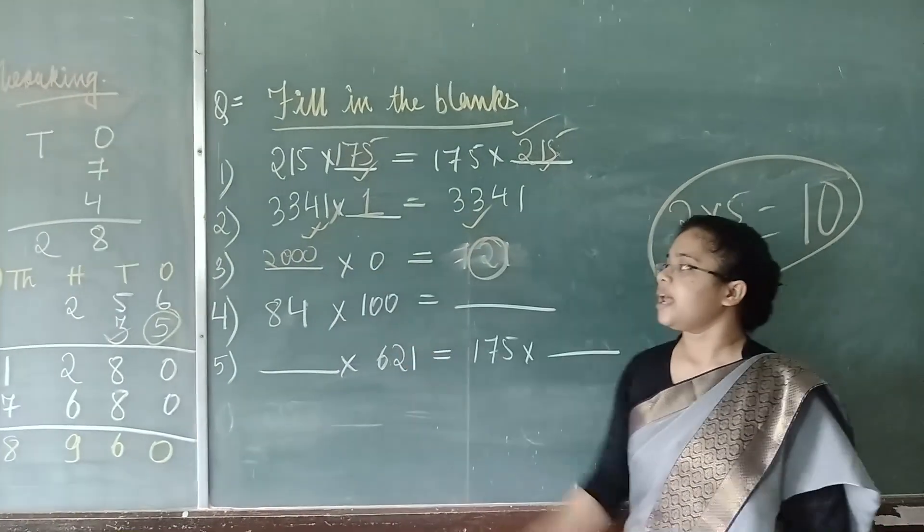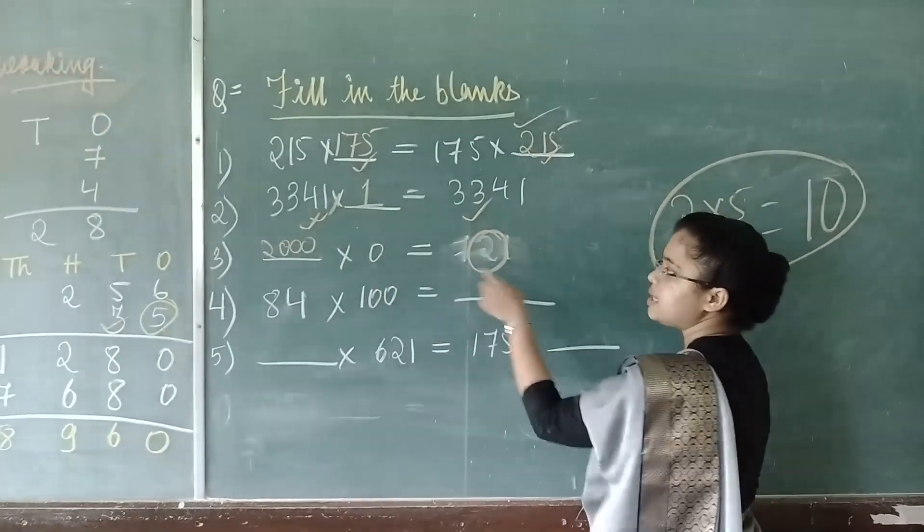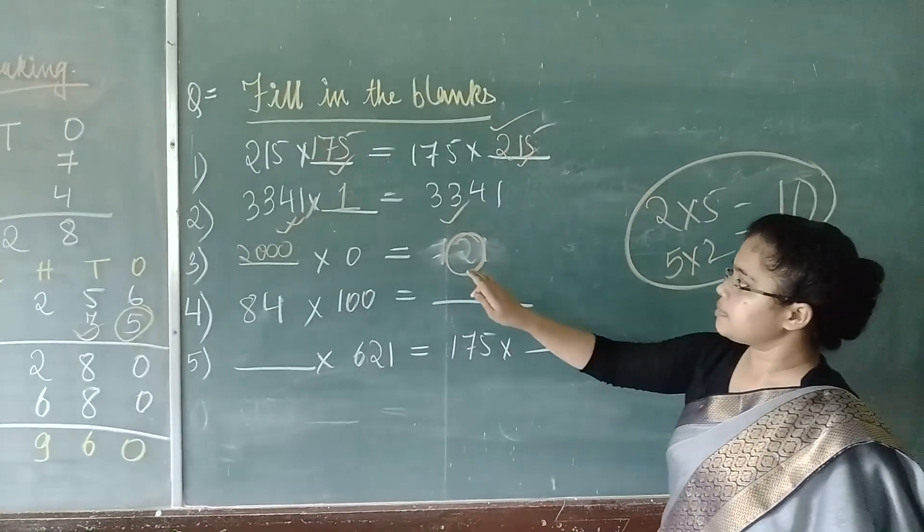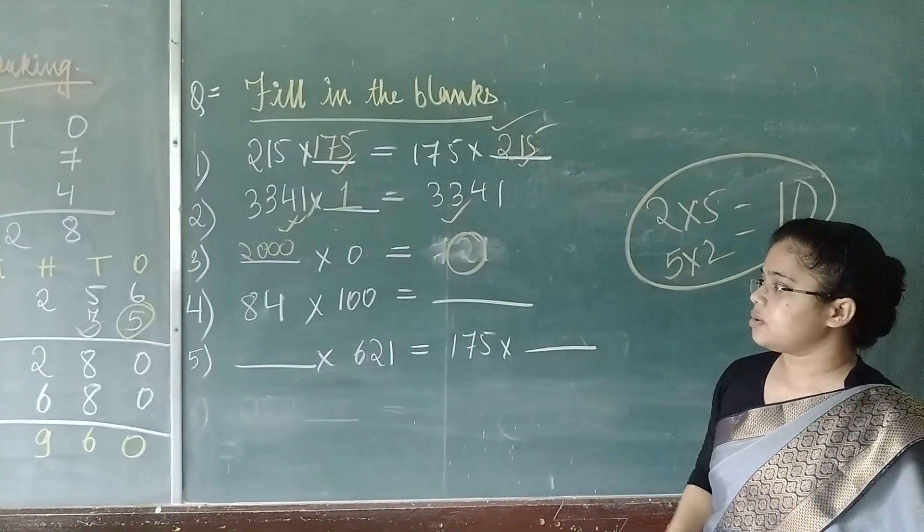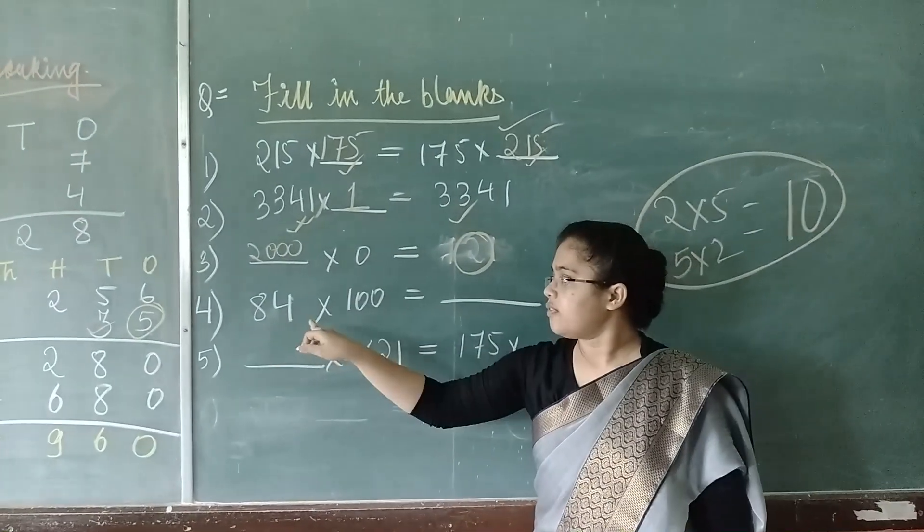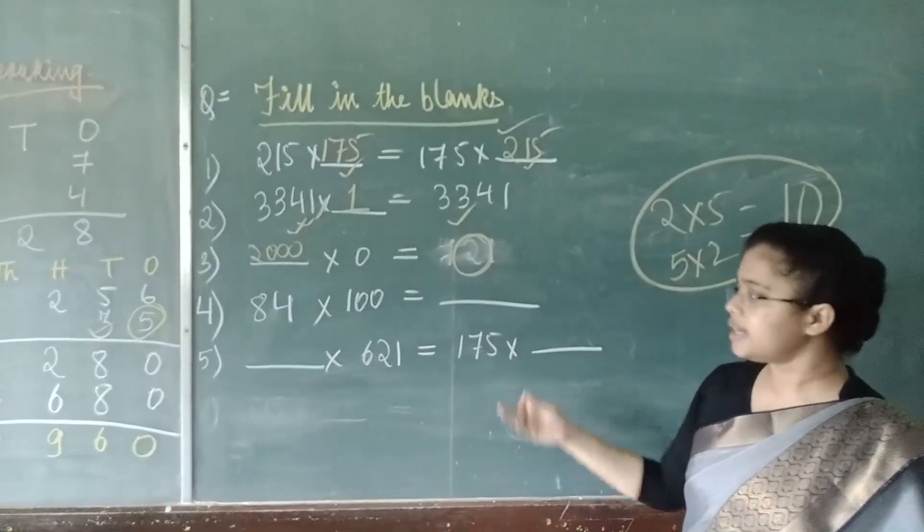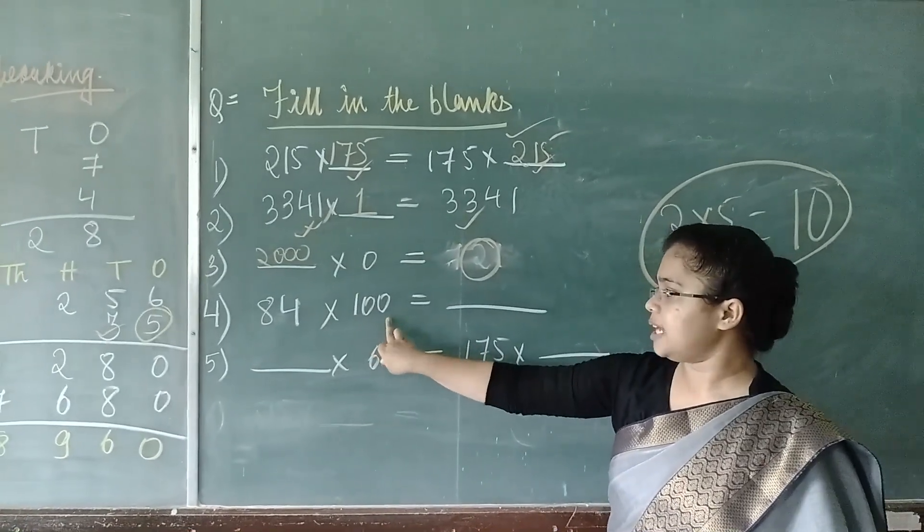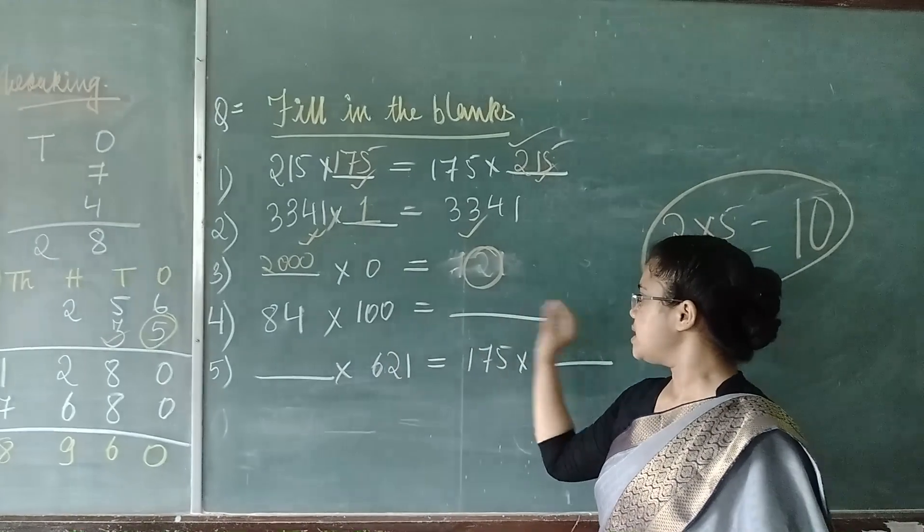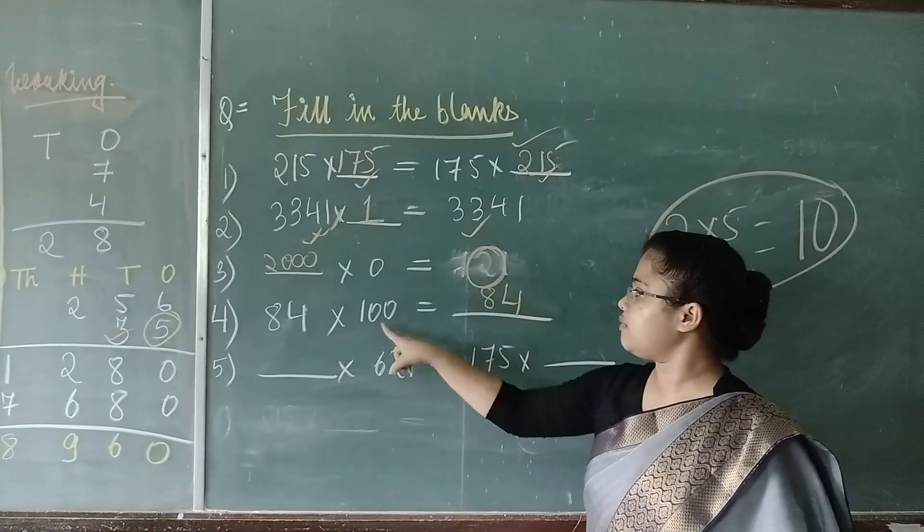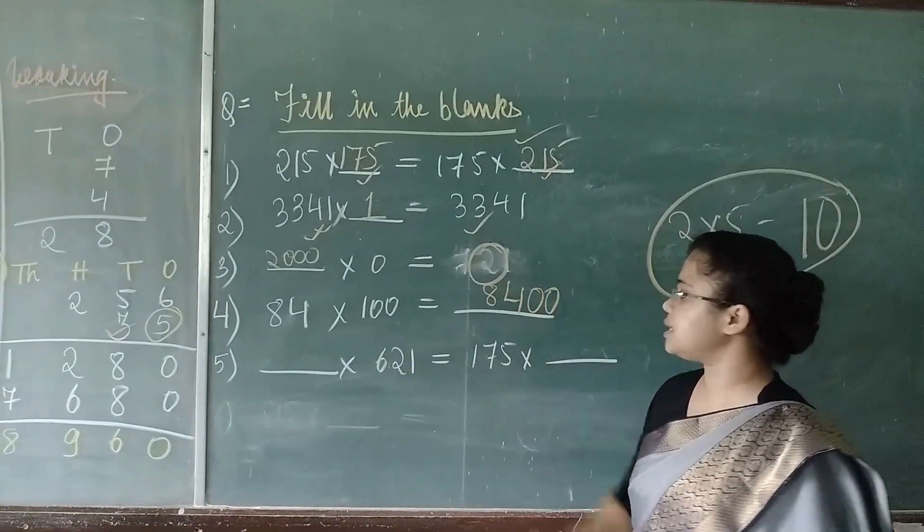Because when we multiply a number by 0, the result is 0. It is not 721, it is 0. So, next one, 84 multiplied by 100. So, we have already seen that when we have to multiply such numbers, so simply we will write 84 and we will add two zeros.